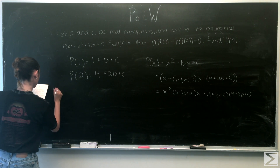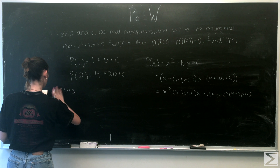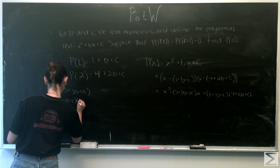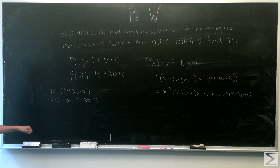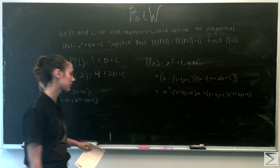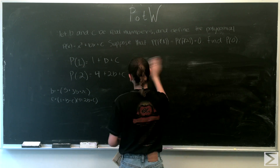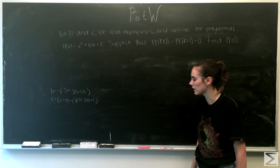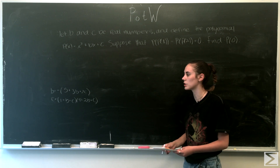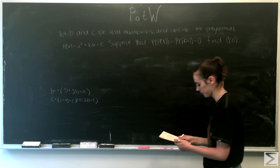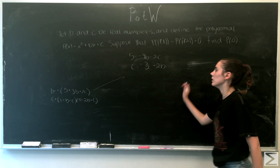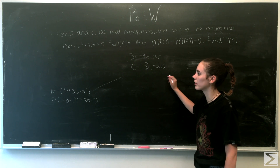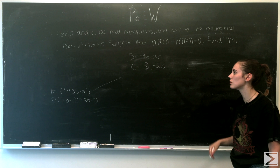From matching coefficients, we get that b = −5 + 3b + 2c, and c = (1 + b + c)(4 + 2b + c). Taking the first equation for b and rearranging in terms of c, we get c = −5/2 − 2b.